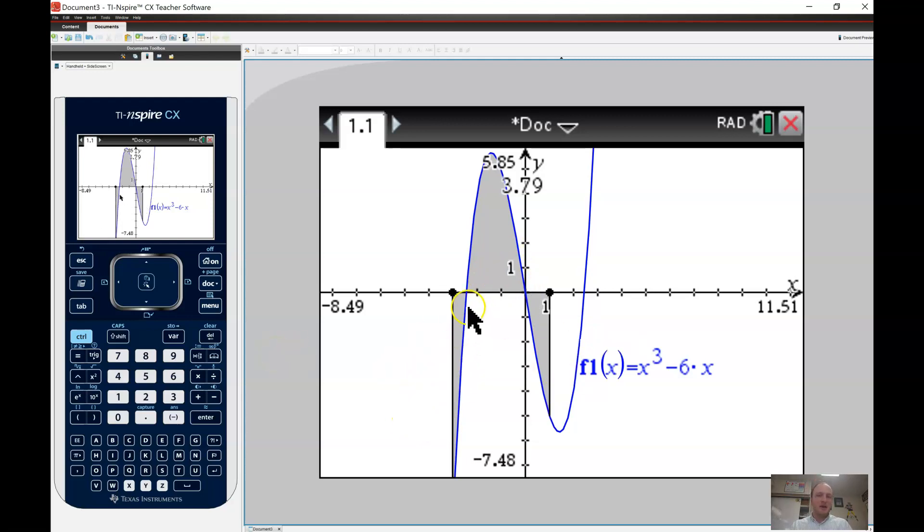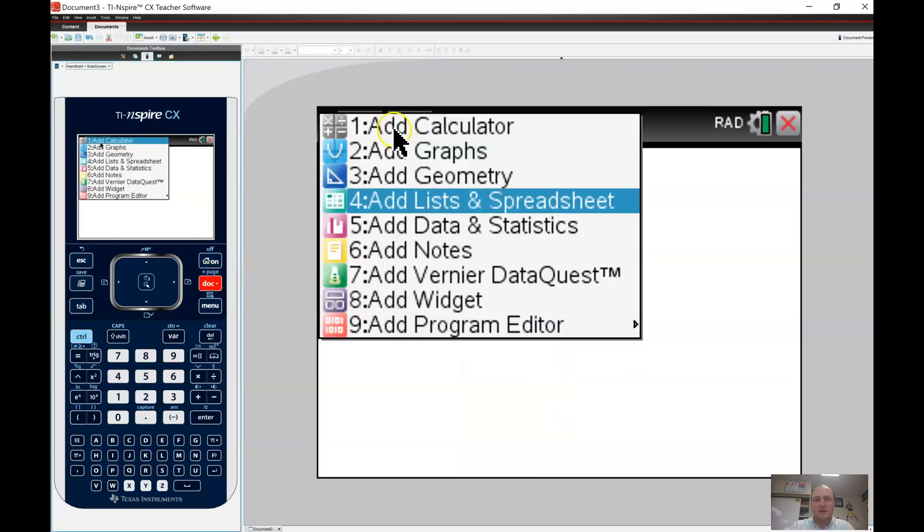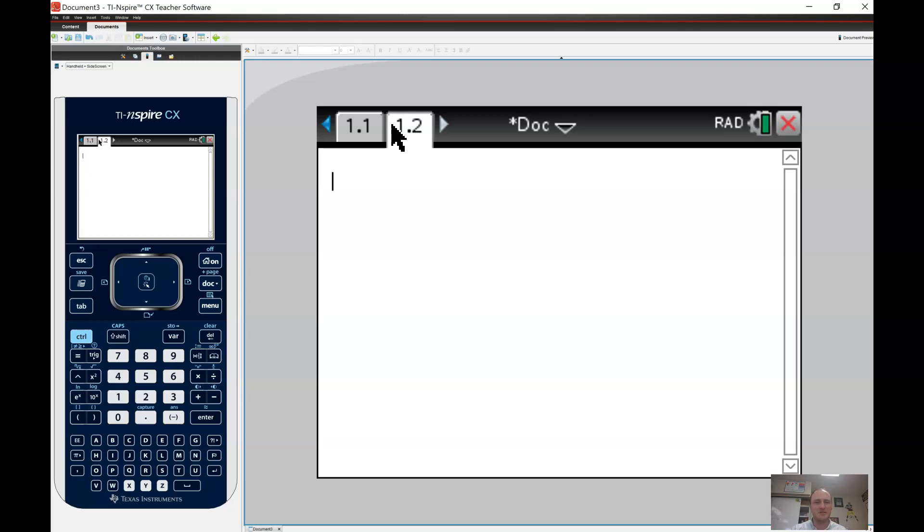Okay, so notice the area here, it could be negative, right? The area here is positive, and the area here is negative. So these kind of take away area from here. All right, so let's go ahead, and I'm going to open up a new page. I'm going to do this in the calculator section.